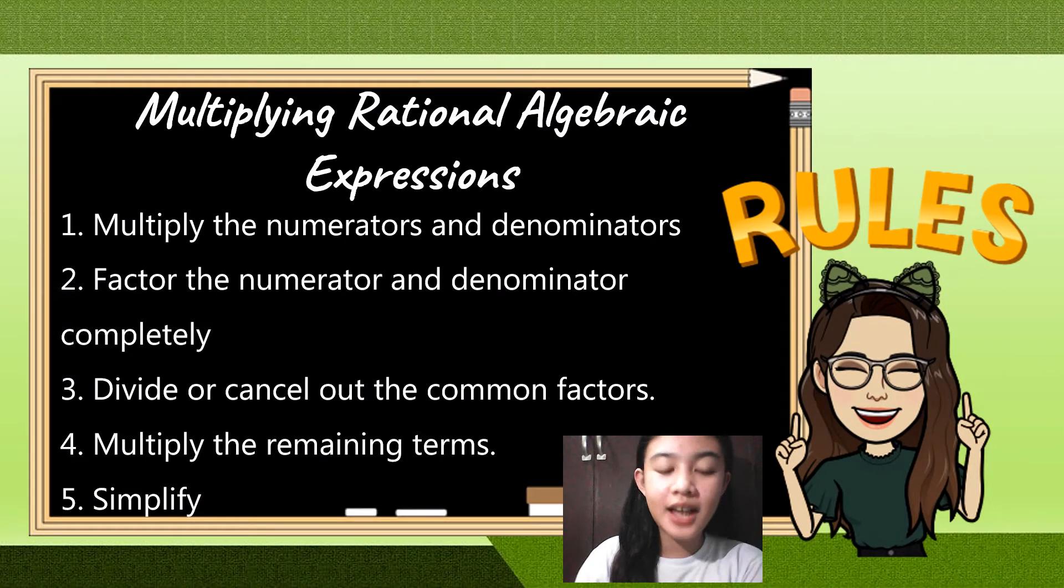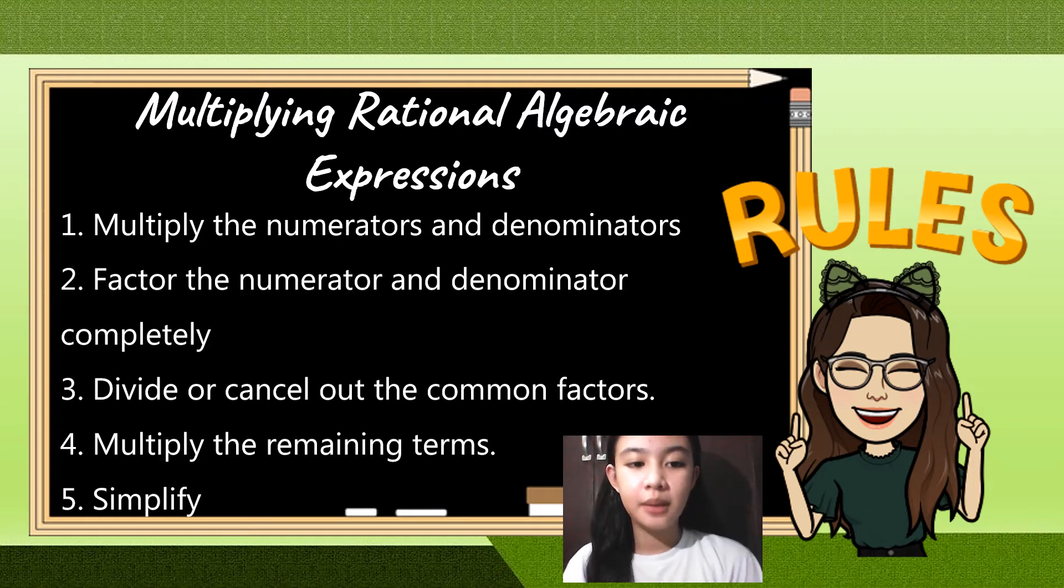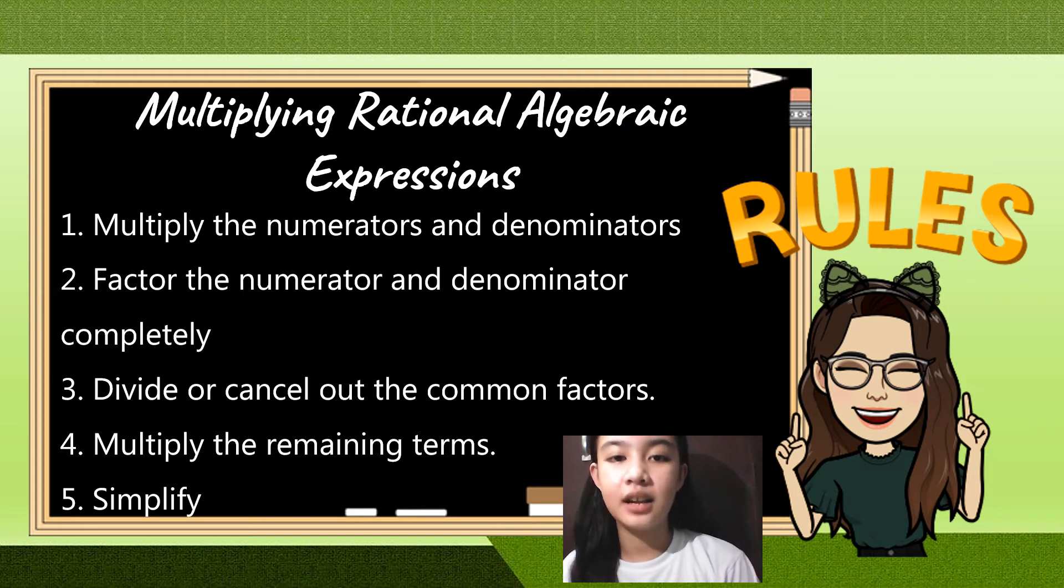So, next, we will proceed to multiply Rational Algebraic Expression. First, multiply the numerator and denominators. Next, factor the numerator and denominator completely. Then, divide or cancel out the common factors. And, multiply the remaining terms and simplify the equation.